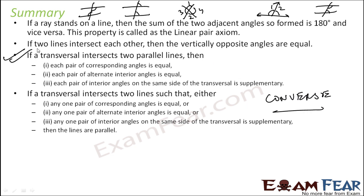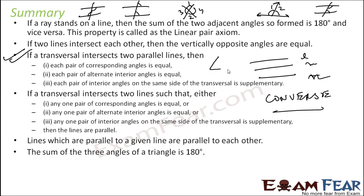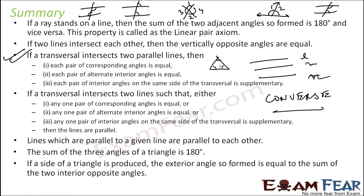Lines parallel to a given line are parallel to each other: if L is parallel to M and M is parallel to N, then L is parallel to N. The sum of the three angles of a triangle is 180 degrees. If a side of a triangle is produced, the exterior angle so formed equals the sum of the two non-adjacent interior opposite angles.